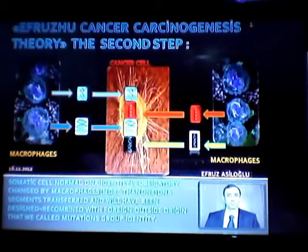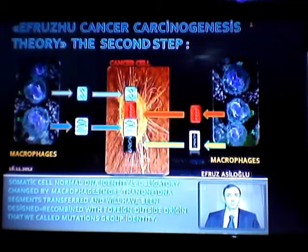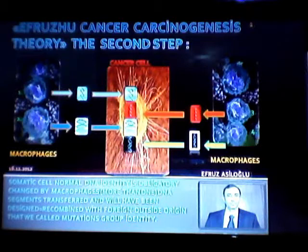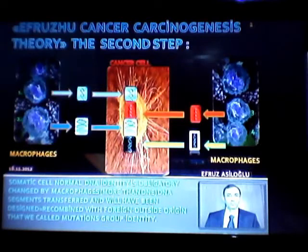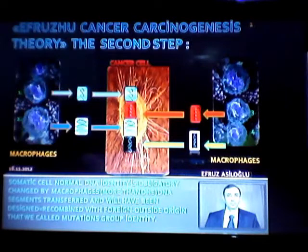Hello everyone. EPRUSHU cancer carcinogenesis theory — similar to one another's style of carcinogenesis in the second step — somatic cell normal DNA identity is obligatorily changed by macrophages more than once. DNA segments are transferred and recombined with foreign outside-origin material, which we call mutations group identity.